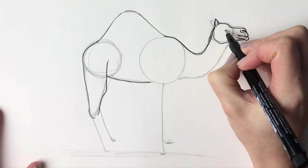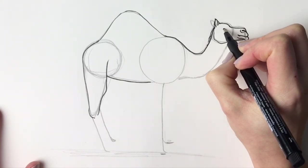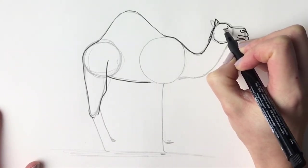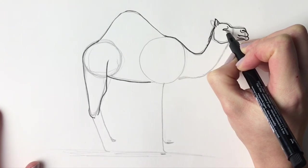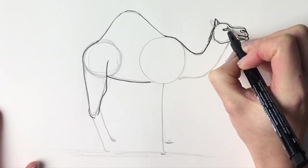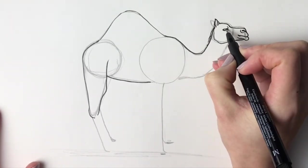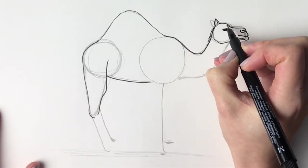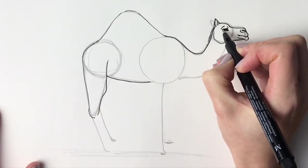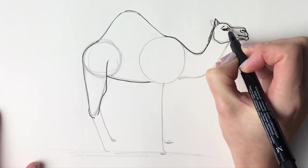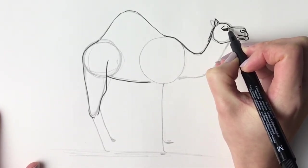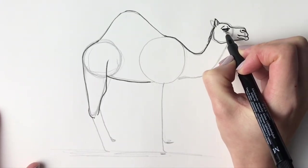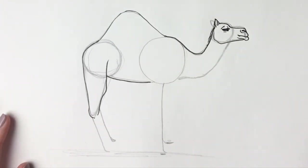Now for these beautiful big expressive eyes. So let's just color this in. They've got lovely long eyelashes to keep all the sand out of their eyes. Just like that.